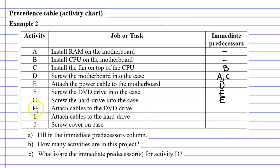Moving on to activity H, we want to attach cables to the DVD drive. Before we can do that, we need to make sure that the DVD drive is screwed in, which is activity F — so F is the immediate predecessor of H. For activity I, we need to attach cables to the hard drive. In order to do that, we need to be sure that the hard drive has been screwed into the case, which is activity G — so G is the immediate predecessor of I.